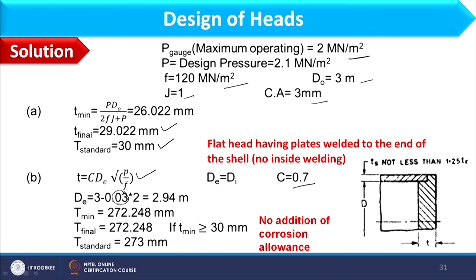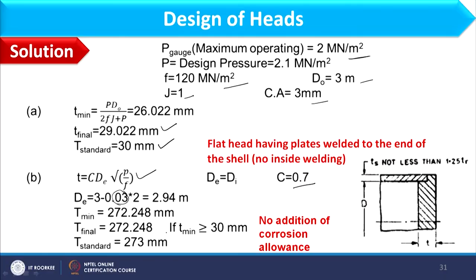Since T_minimum is greater than 30 mm, we do not add a corrosion allowance — as discussed in the terminology lecture (lecture 4 of week 1), corrosion allowance is not added when thickness exceeds 30 mm. Therefore, the final flat head thickness, taken as the next integer, is 273 mm, which is quite high.